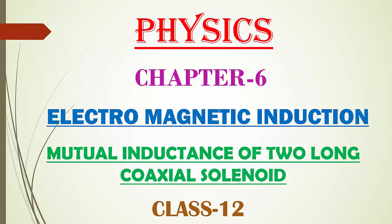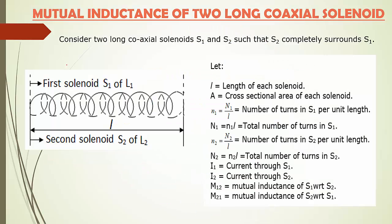Now let us derive an expression for mutual inductance of two long coaxial solenoids. We consider two long coaxial solenoids S1 and S2 such that S2 completely surrounds S1. Observe this diagram. We considered two long air coaxial solenoids — air coaxial solenoid means the core of the solenoids is completely filled with air or free space.